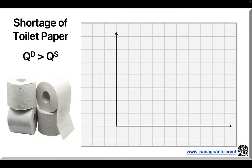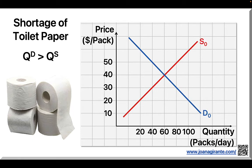Let's use the supply and demand diagram to analyze the toilet paper shortage. On the y-axis we have price per pack, and on the x-axis we have the number of packs per day. A shortage means the market is not in equilibrium.